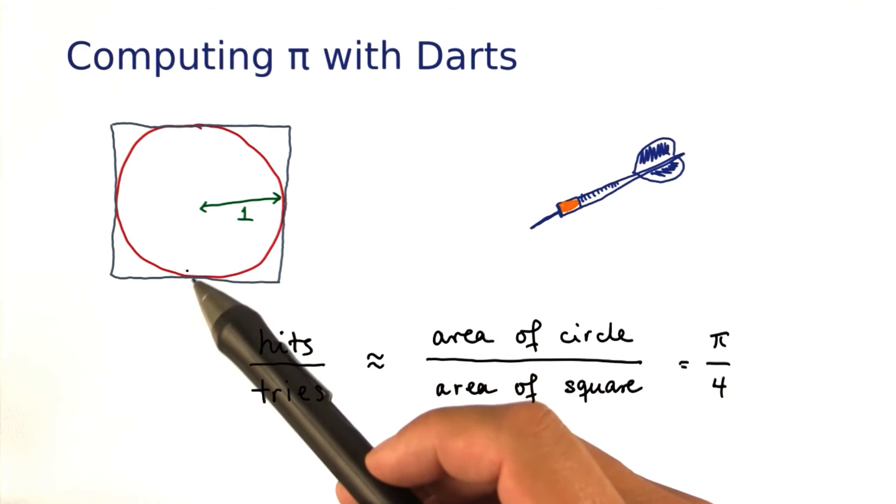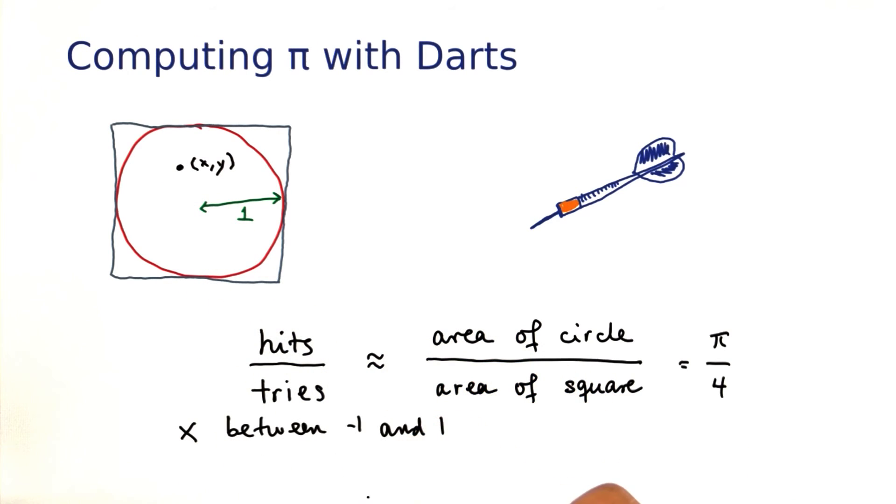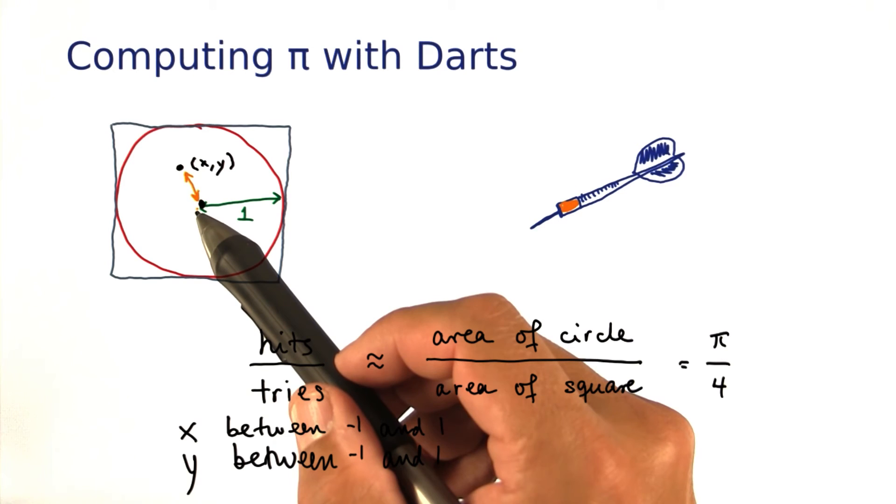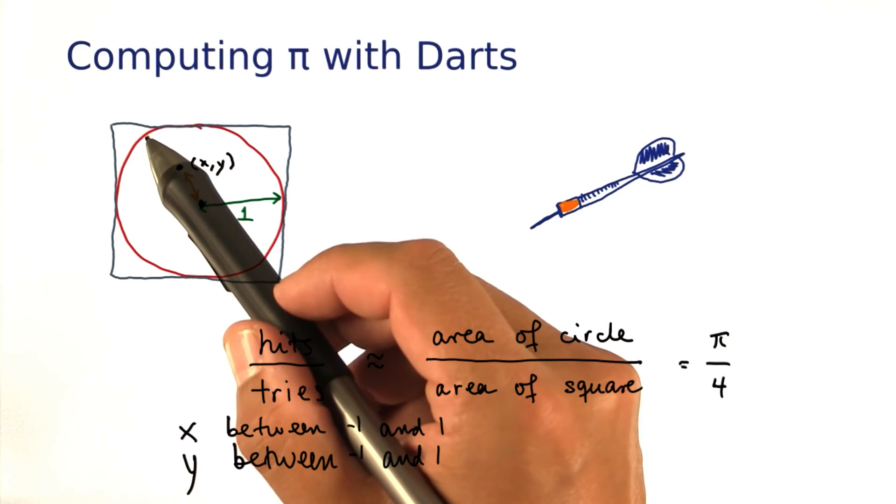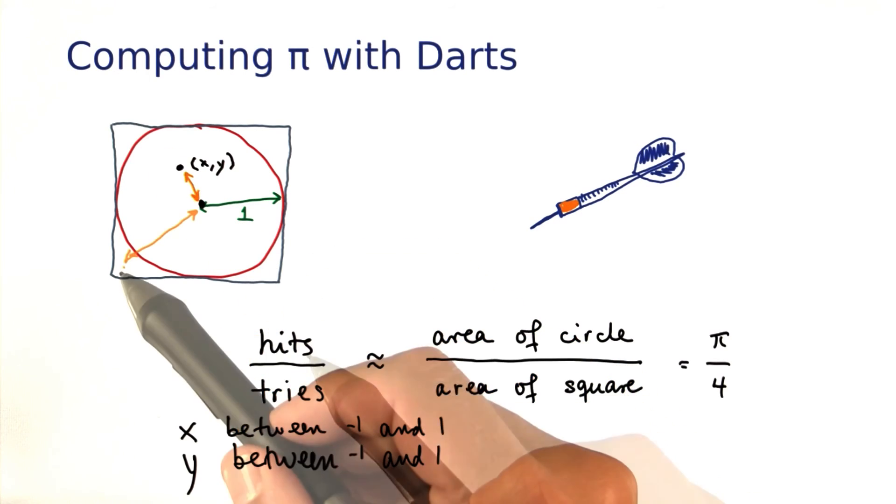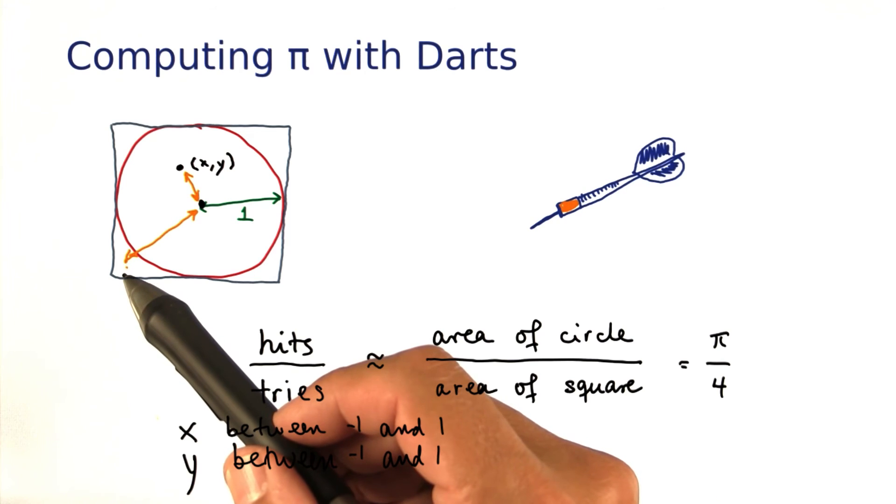So how do we do this in Java? We generate a random x between minus 1 and 1, a random y also between minus 1 and 1, and compute the distance from the origin. If that distance is at most 1, we have a hit. If the distance is larger than 1, we don't have a hit.